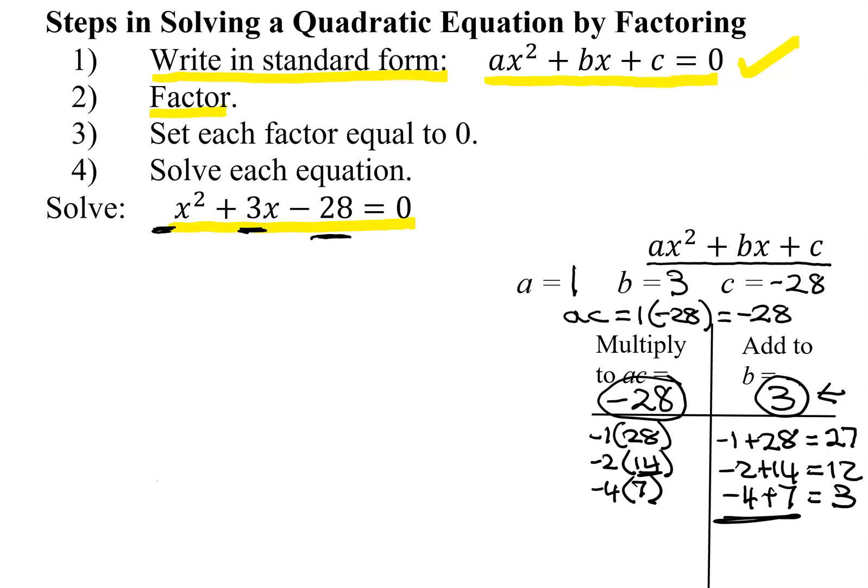So here are my two numbers. And since a was equal to 1, those are my two factors. So I can immediately write my factors down. And I get x minus 4 times x plus 7.